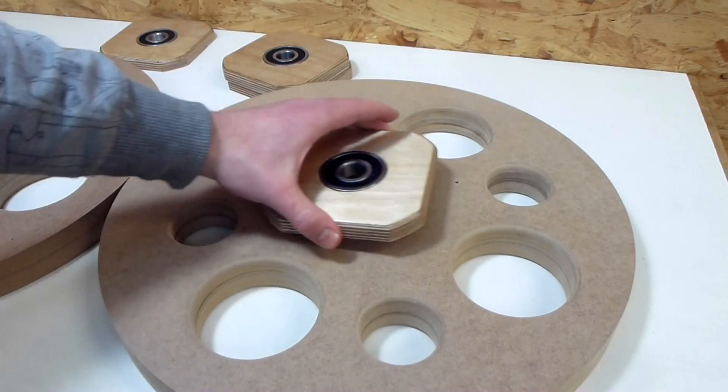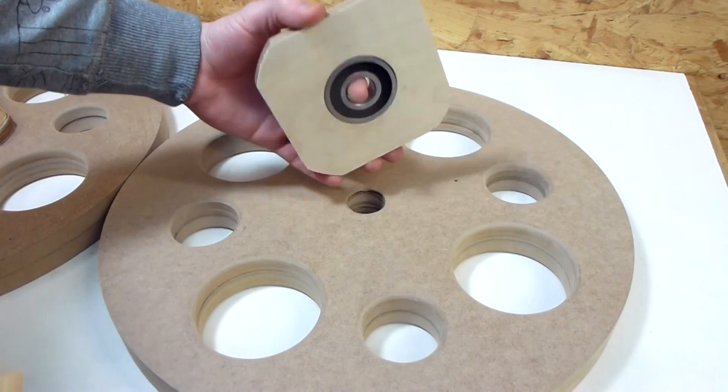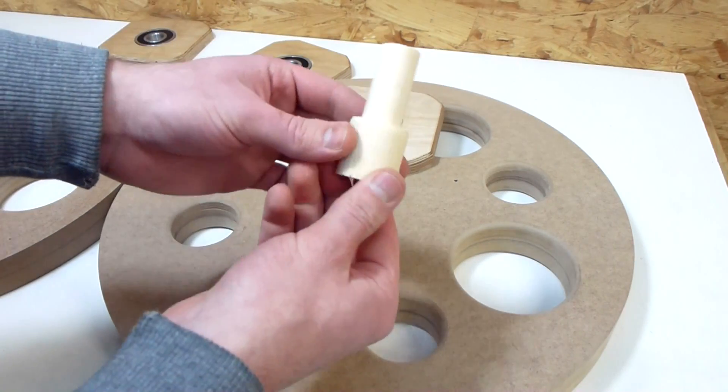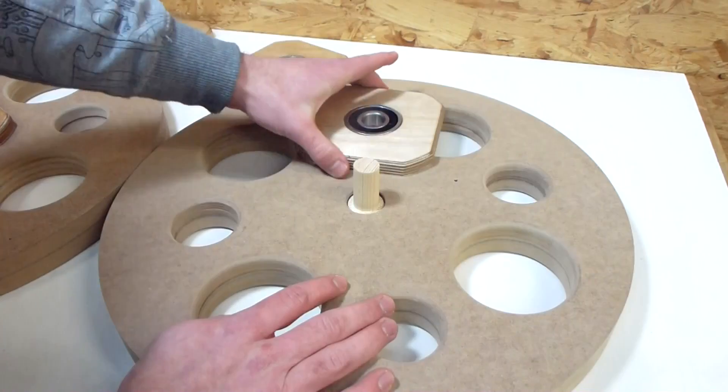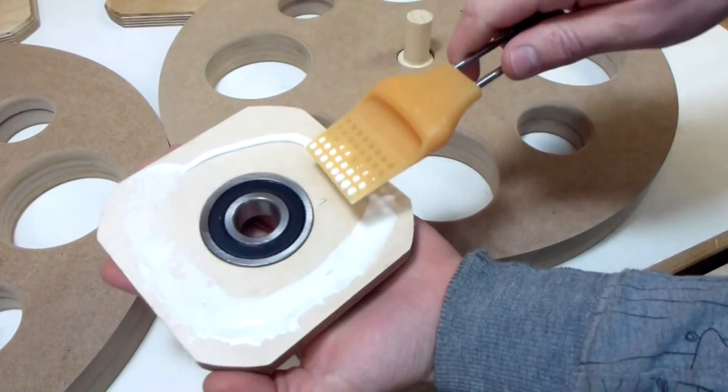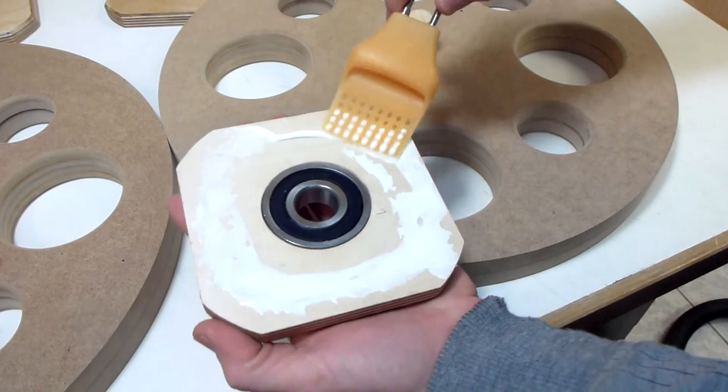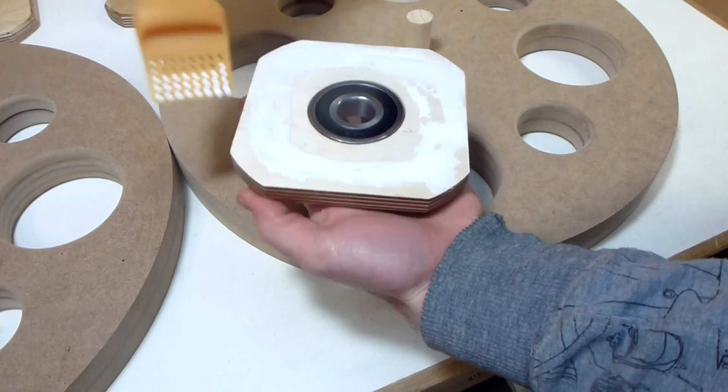Now I'm ready to glue on the first flange on both wheels. It should be as centered as possible, and in order to do that I made this little helper. I just turned it on the lathe, it fits in the center hole of the wheel, and the flange fits on top. And now it's centered. I spread the glue just on the outside so when I clamp the flange the glue won't squeeze into the bearing.